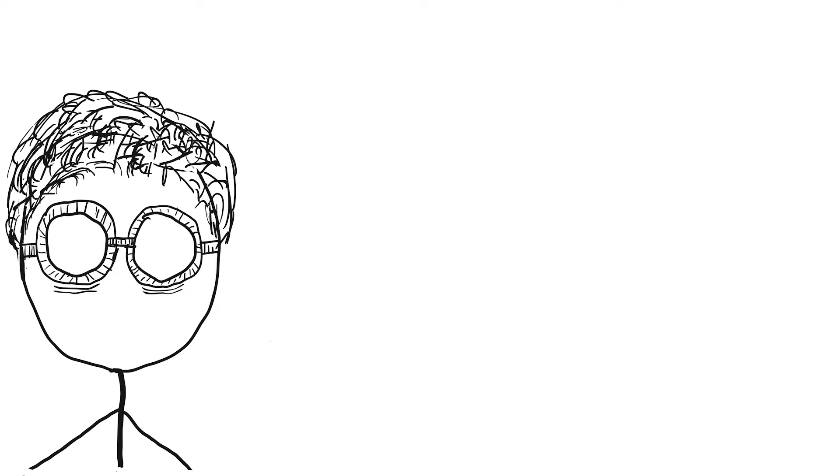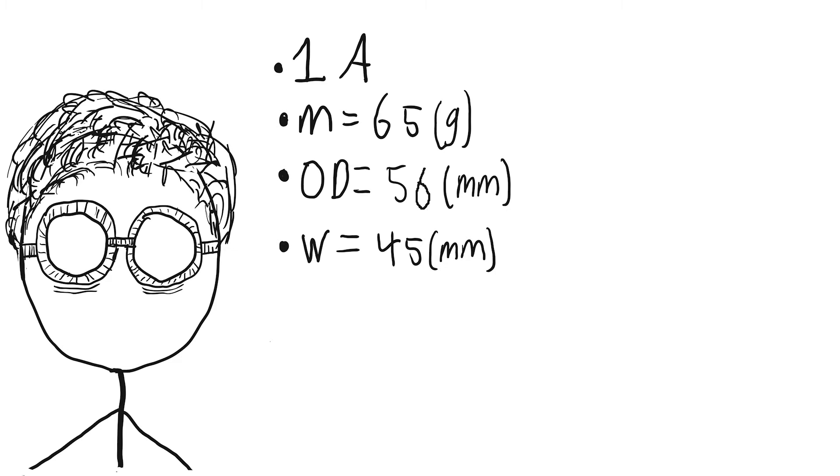For this part, I've decided I want my yoyo to be used for 1A, weigh 65g, be 56mm in diameter, 45mm wide, and I want it to have a C-sized bearing and use what I will loosely call standard response, because even standard response isn't very standardized, but I'll get to that later.